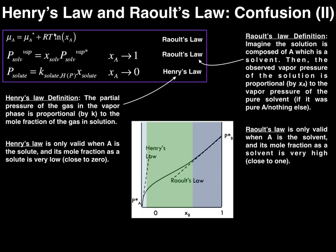Raoult's Law has another equation that describes it: the chemical potential of ethanol in solution is equal to the chemical potential of pure ethanol plus RT times the natural log of the mole fraction of A. So if this equation is also satisfied — you don't really do calculations with this, it's more of a conceptual thing — if it's satisfied by this equation, then it's satisfied by Raoult's Law also.